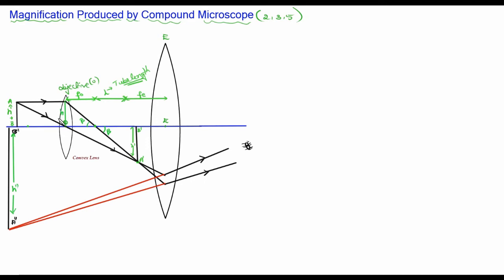This is our ray diagram which represents the final magnified image produced by the microscope. By adjusting the tube length using the knob, we adjust the image produced by the objective lens so that the final image is formed at the desired position.